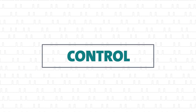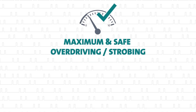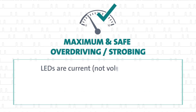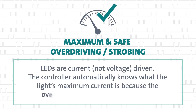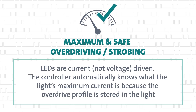Control. When strobing and overdriving lights, it's important to remember that LEDs are current, not voltage-driven. The controller automatically knows what the light's maximum current is, because the overdrive profile is stored in the light. It also knows the temperature of the light, so it can turn them off if they're too hot.